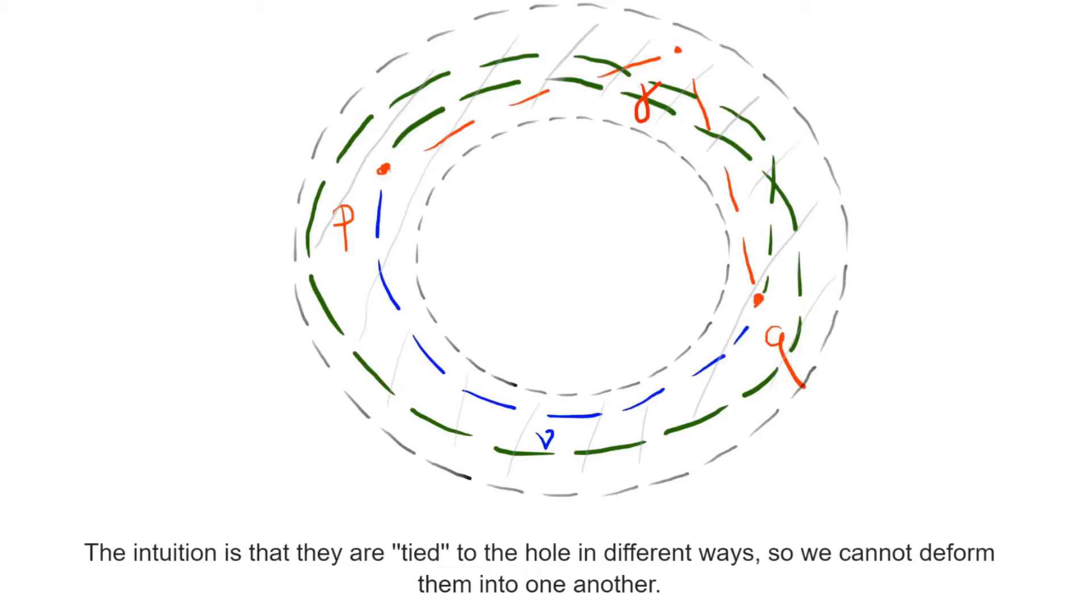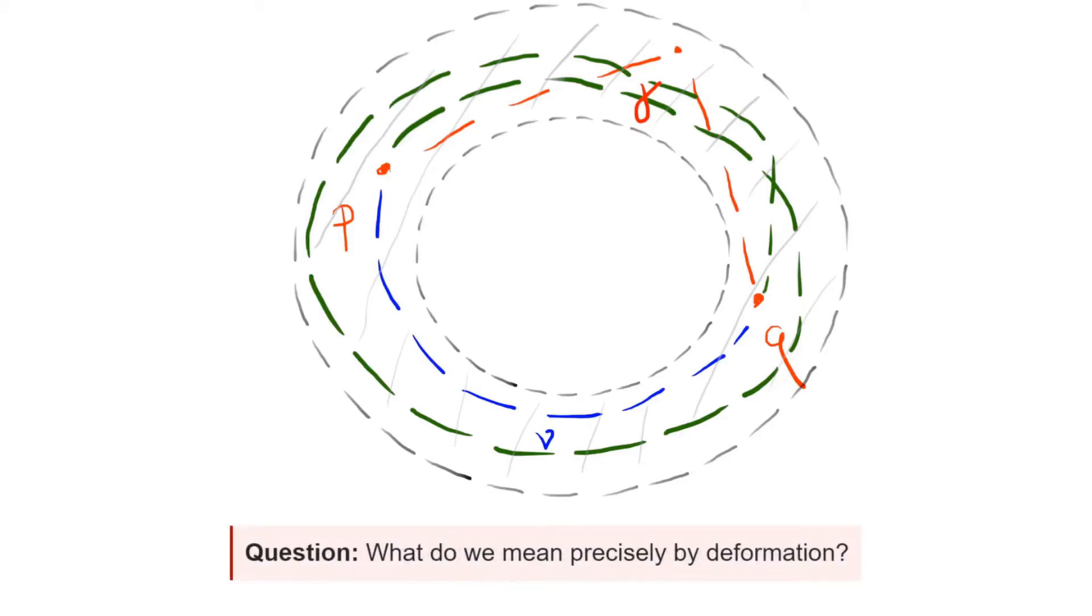For instance, since gamma and nu are tied differently to the hole, we shouldn't be able to deform one into the other. What we should do at this point is to make precise what we mean by deforming a path into another path.